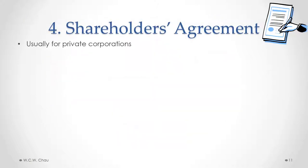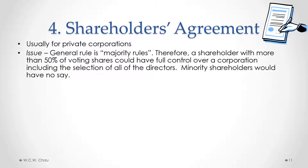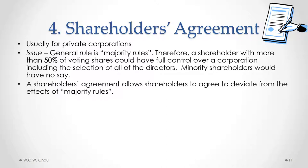A shareholders' agreement is typically used with private corporations. The issue it is meant to address is the general rule of majority rules — meaning the shareholder with more than 50 percent of the voting shares can impose their will and have full control over a corporation without any say from the minority shareholders. A shareholders' agreement allows the minority shareholders to have some role or influence as agreed to within the agreement.